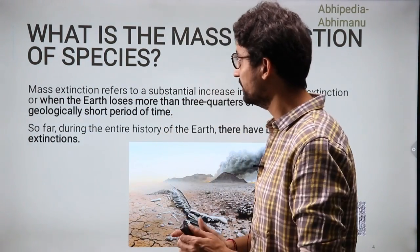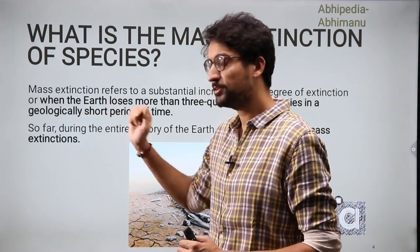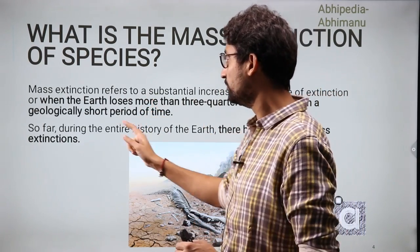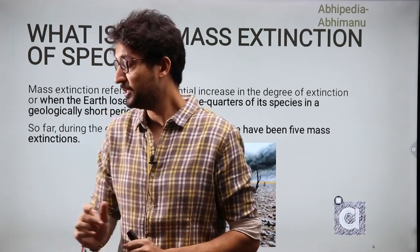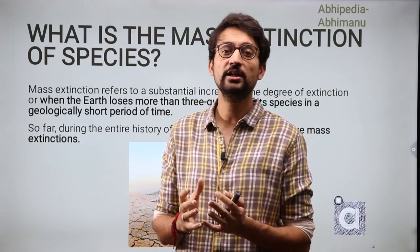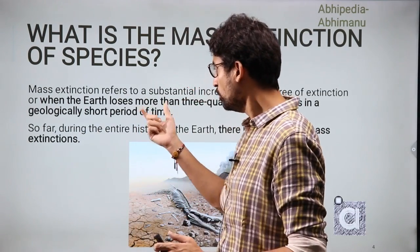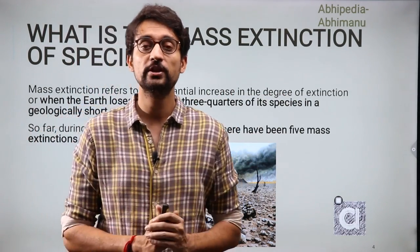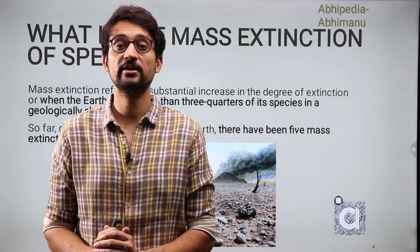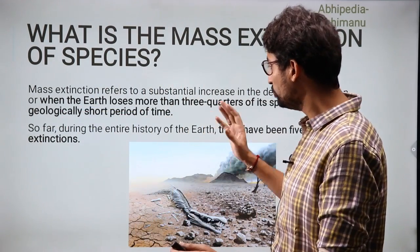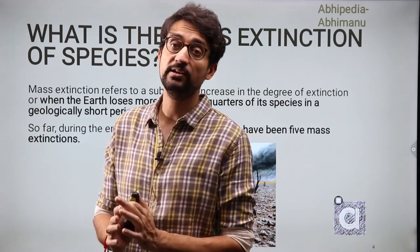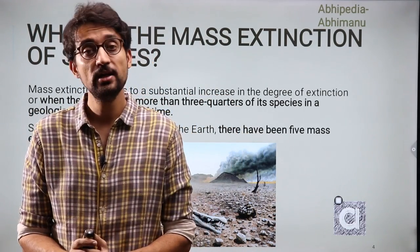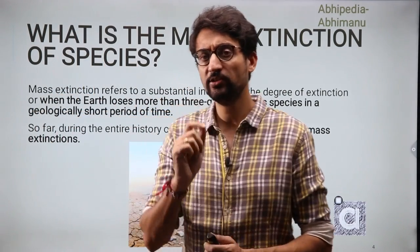We are talking about mass extinction. Geologically — meaning within a very short geological time period — if our mother Earth loses more than three quarters of its species, meaning more than 75% of species, we place that particular event in the mass extinction category. Till now, five such mass extinctions have been seen on our entire planet.